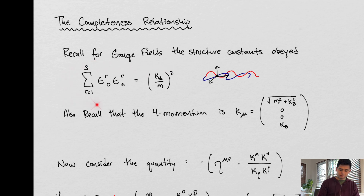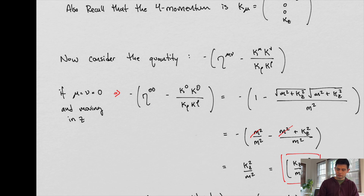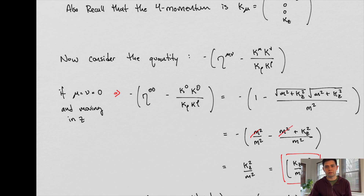We found this relationship last time. And we also recall that Kμ — if our photon is traveling in the Z direction — has a four-momentum that looks like this. Now let's consider the following quantity, which at first glance might seem a little random, but let's take it apart and see how it may have come about.